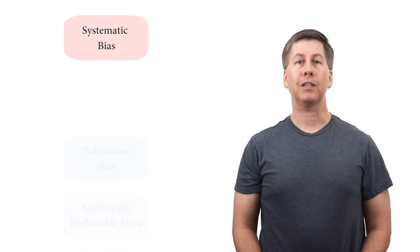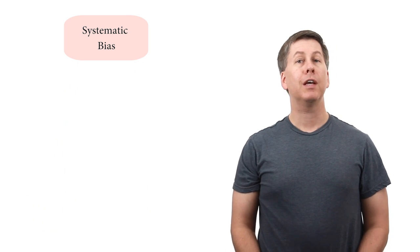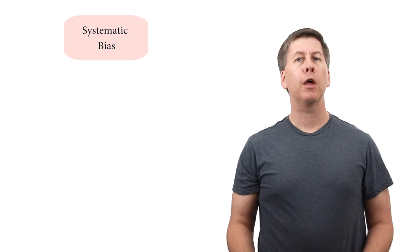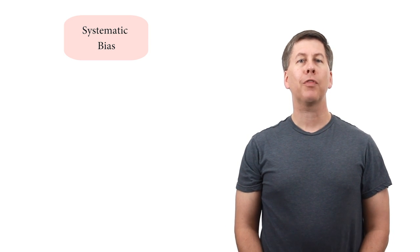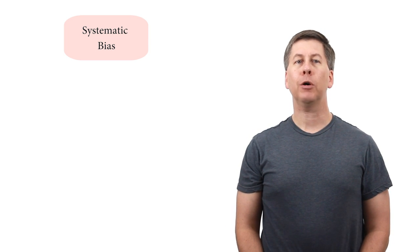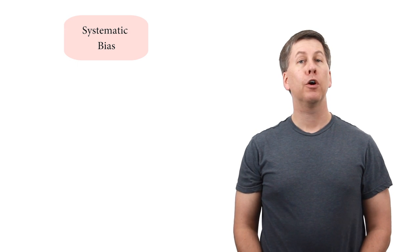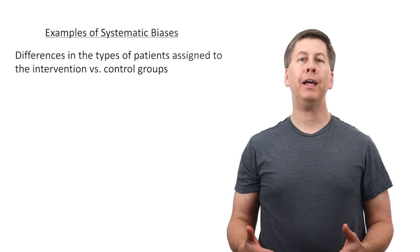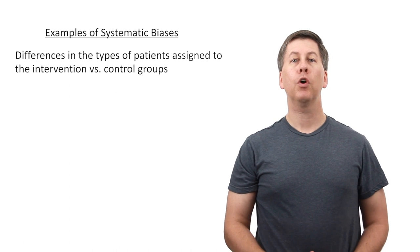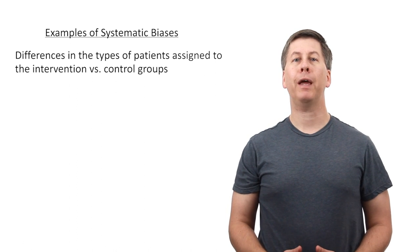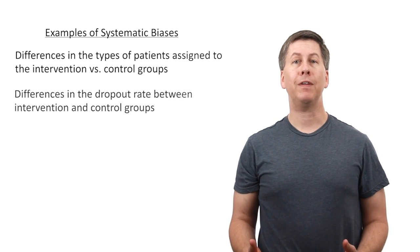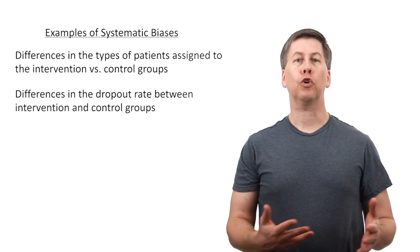First is systematic bias in the design of studies. In this usage, bias doesn't necessarily refer to prejudices by the investigators, but rather refers to aspects of the methodology that erroneously influence the outcome of a trial beyond chance alone. For example, if a clinical trial has selection bias, it means that there were inherent differences in the types of patients who underwent intervention versus control, or inherent differences in the types of patients who did or did not participate in the study at all.